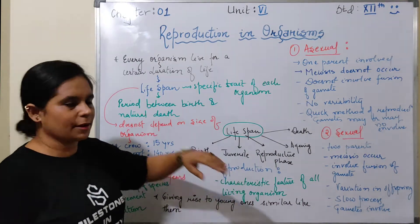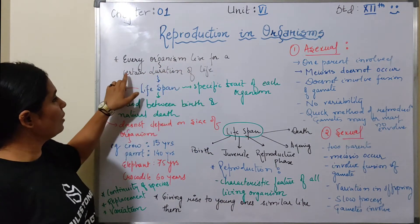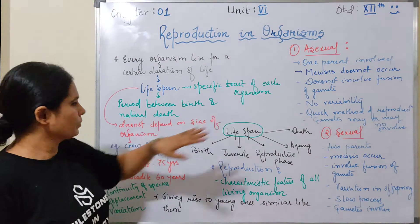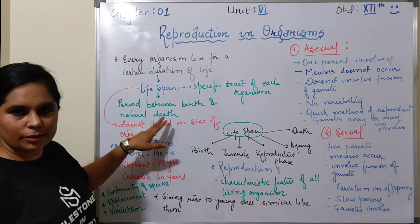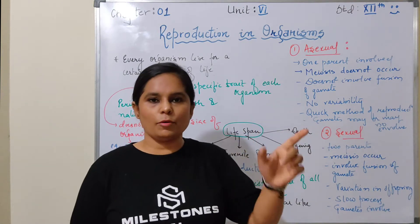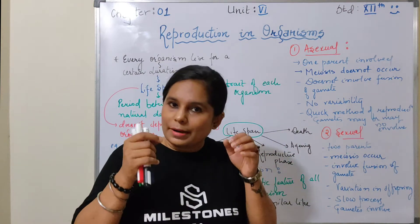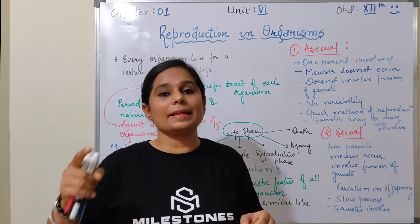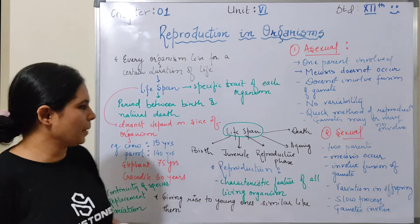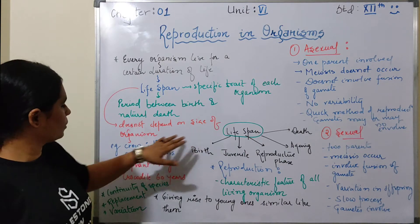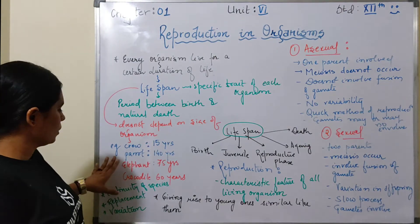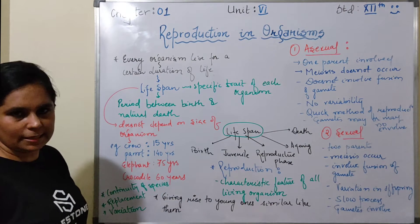Let's see what I have written on the board. Every organism lives for a certain duration of life. Life span is a specific trait of each organism — it is the period between birth and natural death. If there is an accidental death, that does not define the life span. Life span does not depend on the size of the organism; similar-sized organisms can have different life spans. For example, the elephant is 75 years and the crocodile is 60 years.